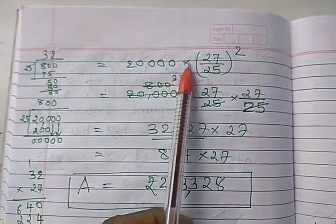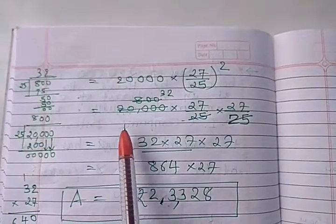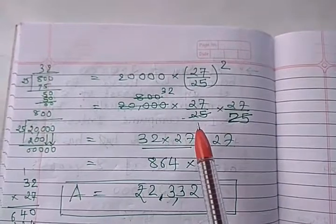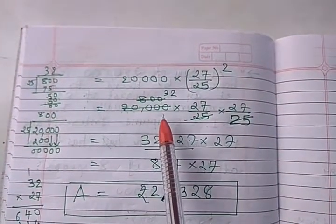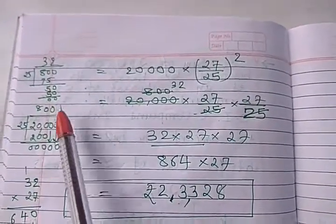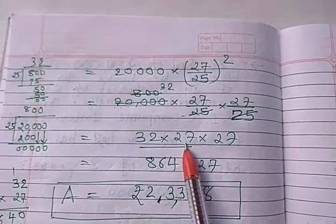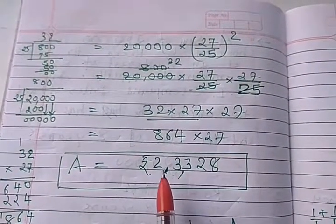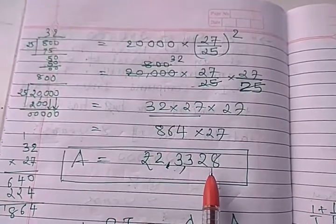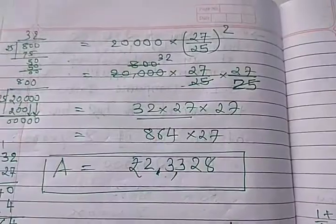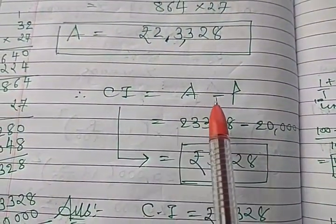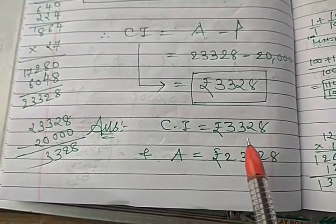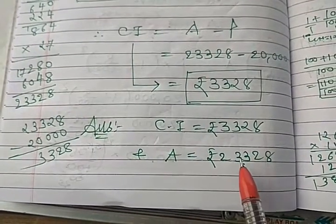So 20,000 into 27 upon 25 whole square. Means 20,000 into 27 upon 25 into 27 upon 25. You make it cancel, 25, 800. Here I have given the division. Then you will get 32, 27 in the numerator. Make it multiply sequentially, and you will get the amount 23,328 rupees. Now you find the CI. CI is equal to A minus P. So you will get 3,328 rupees. So your answer is compound interest is 3,328 rupees and amount is 23,328 rupees.